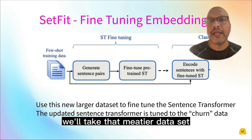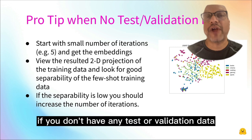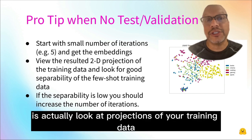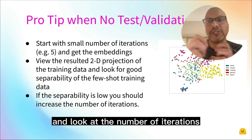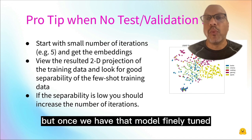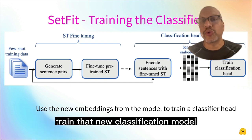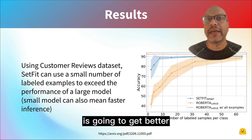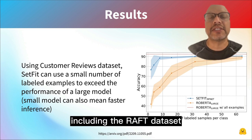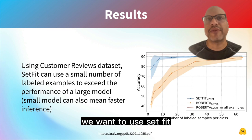We'll take that meatier dataset and use it to fine-tune the embeddings. If you don't have any test or validation data, it's hard to understand how well your embeddings are doing. What you can do is look at projections of your training data and look at the number of iterations until you can create some separability there. Once we have that model fine-tuned, we take those new sentence embeddings and train a new classification model, which is going to give better performance. The full paper has lots of details run on many tests, including the RAFT dataset, which is well known for few-shot learning.